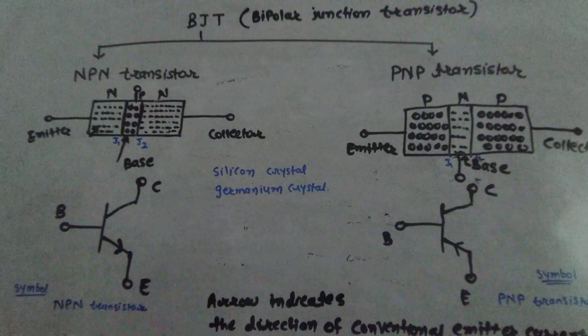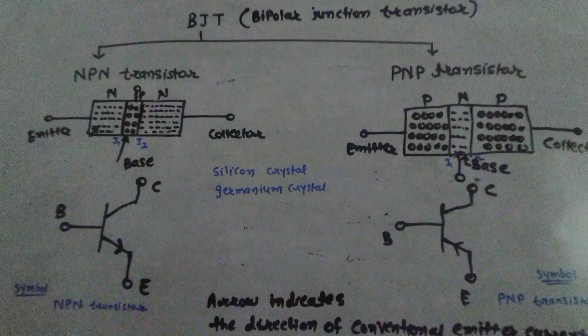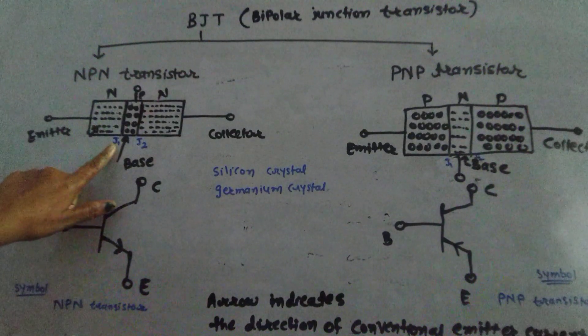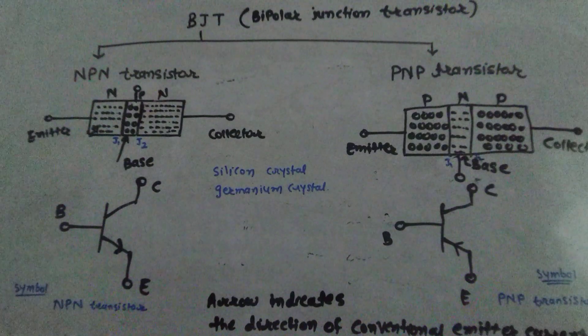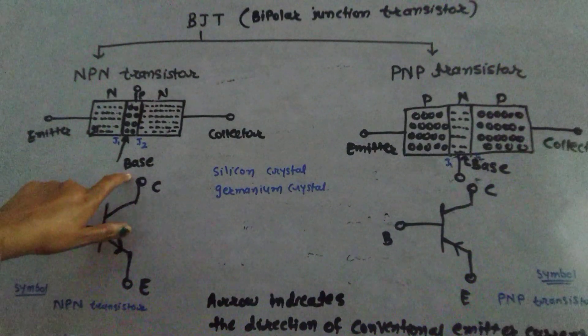A transistor is a PN device, that is a semiconductor device having two junctions, J1 and J2. These are two junctions and there are three terminals: emitter, base, and collector.